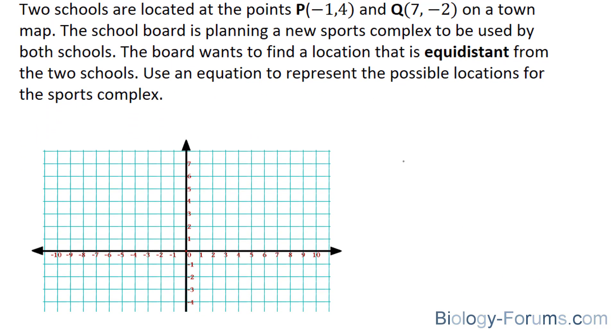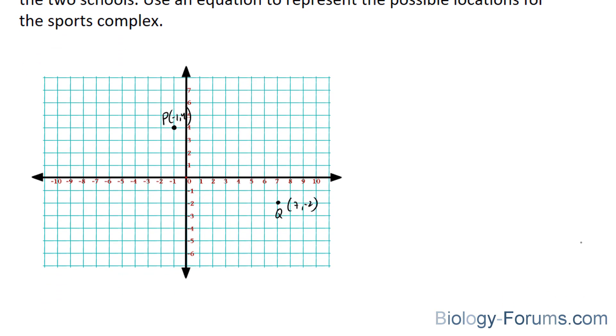We'll start off by plotting these two points, P at negative 1 and 4. Here's negative 1 and 4, that's point P. And Q, which is at 7 and negative 2. 7 and negative 2, and up here we have negative 1 and 4. And what I'll do next is connect these two points with a line.